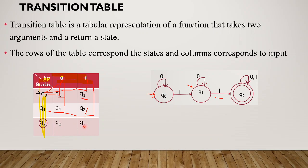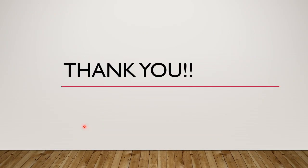This is the table representation — a transition table. We can represent any finite automaton this way. In this video we discussed the transition system and transition table, which are the two ways to represent finite automata. The transition system is a graph, and the transition table is a tabular representation showing states, transitions, and inputs. Hope the concept is clear. Thank you for watching.